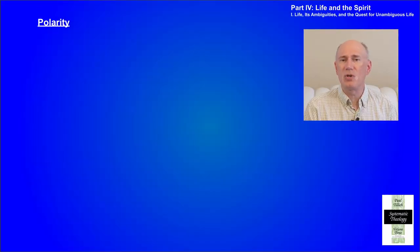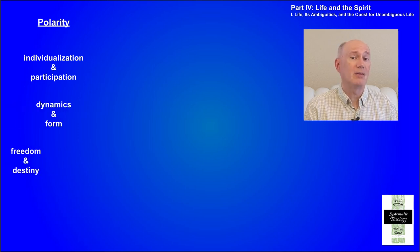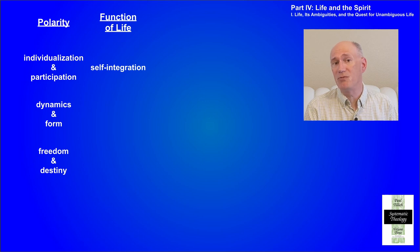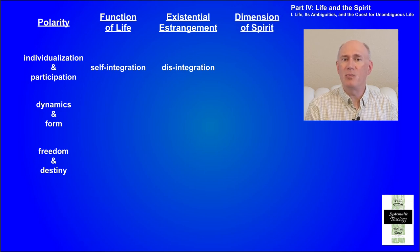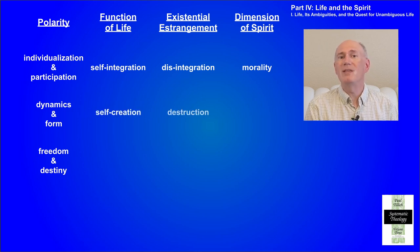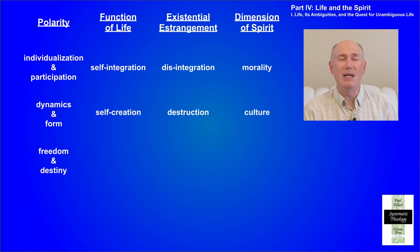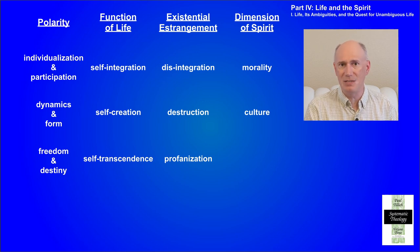Tillich then describes three important polarities. The first polarity in the structure of being is individualization and participation. The second is dynamics and form. The third is freedom and destiny. The polarity of individualization and participation is represented by the self-integration function of life, with disintegration as the existential estrangement — in the dimension of spirit, this is morality. The polarity of dynamics and form is represented by the self-creation function of life, with destruction as its existential estrangement — in the dimension of spirit, this is culture. Lastly, the polarity of freedom and destiny is represented by the self-transcendence function of life, with profanization as the existential estrangement — in the dimension of spirit, this is religion.